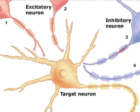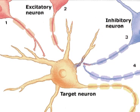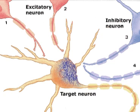This leads to an inhibitory postsynaptic potential in the target cell. The negative charge, represented by blue dots, spreads passively within the target cell, causing the cell to hyperpolarize. The membrane potential declines further from the excitation threshold.